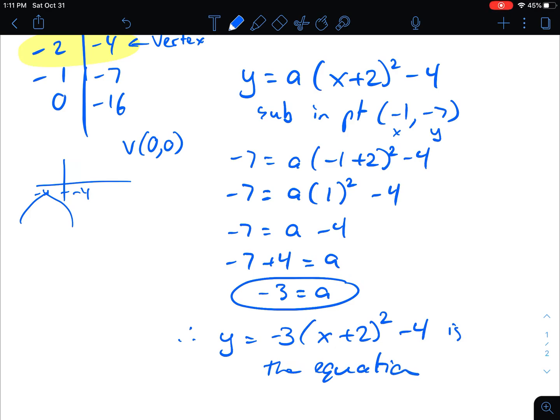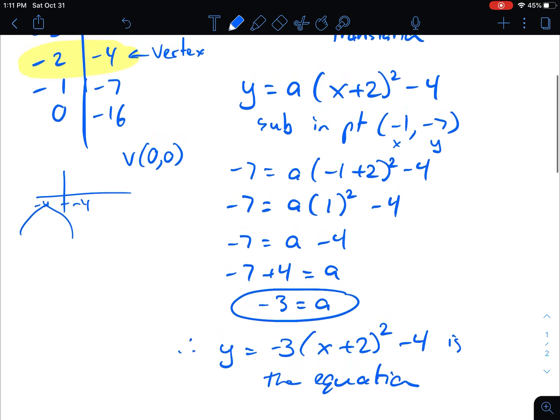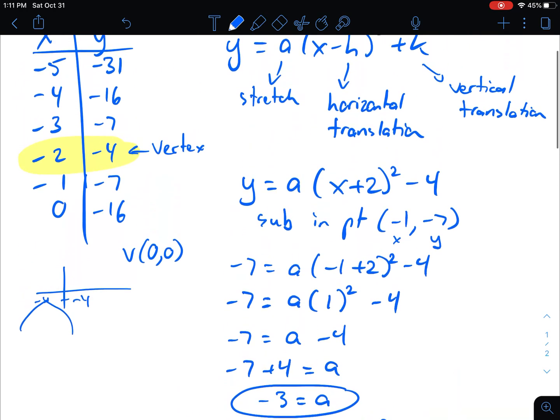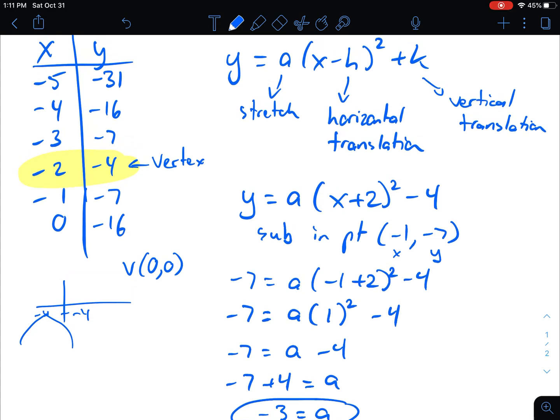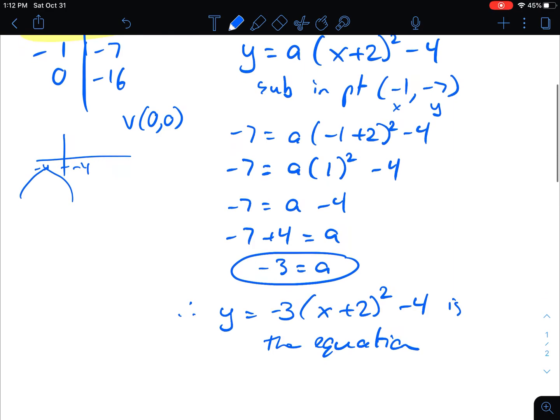So again, the steps are, you want to identify where the vertex is. Use that to get your h and k. Once you do your h and k, you sub in any known point, anything, as long as it's not the vertex, any known point, and you should be able to get your a value, your stretch factor. And yeah, there's an example.